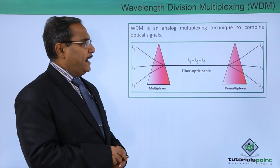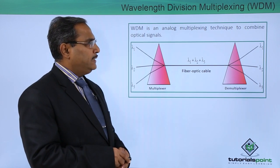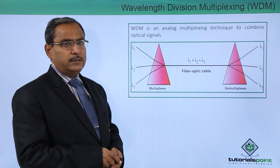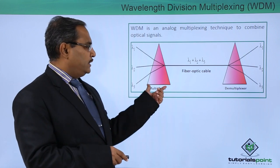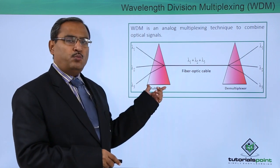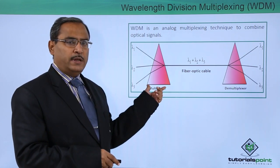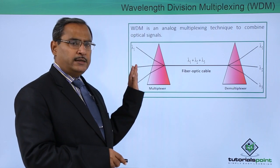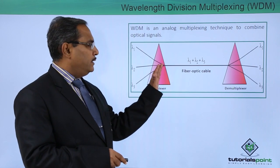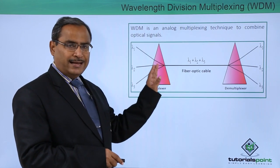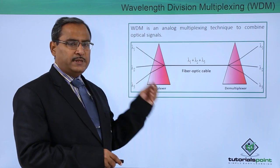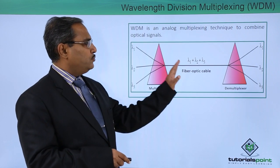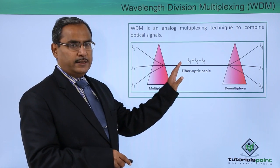WDM is an analog multiplexing technique to combine optical signals. Here we have put one prism. Consider that we are having air on one side, then the glass — the prism is made of glass — and then air again on the other side.